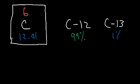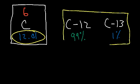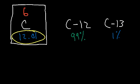So if you have 100 carbon atoms, 99 are carbon-12 (six protons, six neutrons) and one is carbon-13 (six protons, seven neutrons). The average atomic mass is a weighted average of all isotopes. To calculate it, multiply each isotope's mass by its relative percentage as a decimal, then add them up.